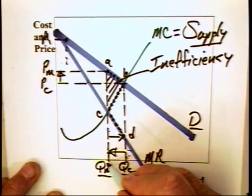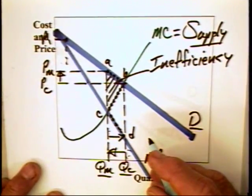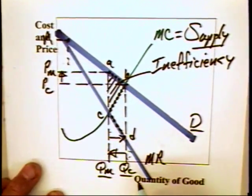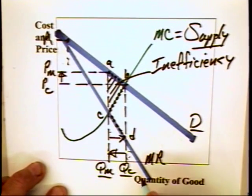Its additional cost would be QM, C, B, QC. So its cost would be greater than its additional revenue and the monopolist would therefore be reducing its profits.